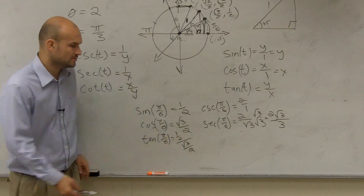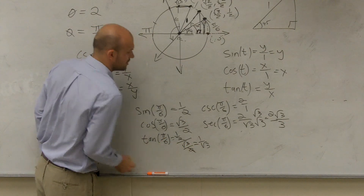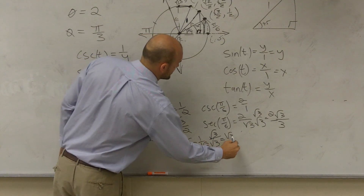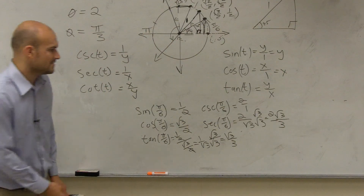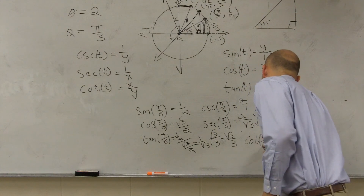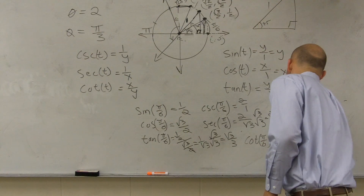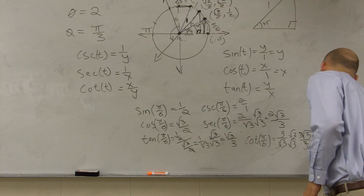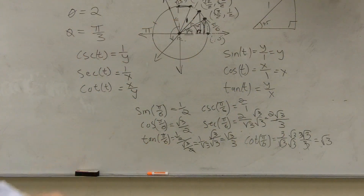I'm dividing by two on both, so those can cancel out. And so I have one divided by the square root of three, which equals square root of three over three. And then the cotangent is just going to be the reciprocal of that. So you flip that over: three over radical three. Rationalize the denominator and you get three radical three over three. Those divide out and you get square root of three. Now the video's over.